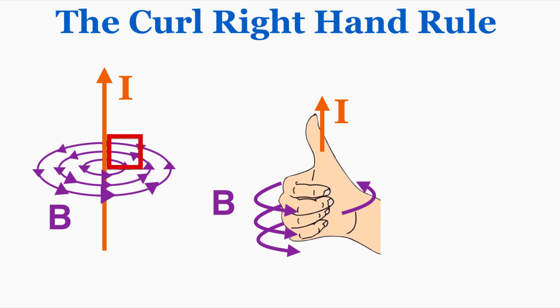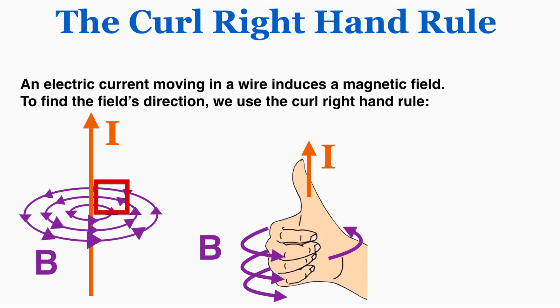This video is about the curl right-hand rule. We use the curl right-hand rule when a moving current induces a magnetic field. We use it because an electric current moving in a wire actually induces a magnetic field, and to find the field's direction we use this curl rule.